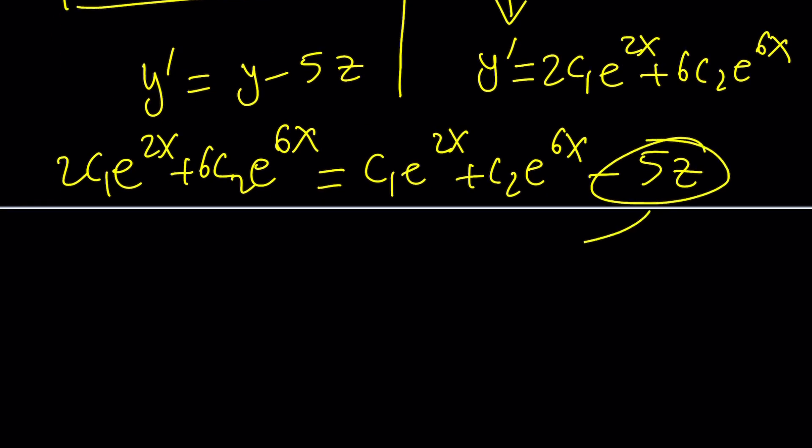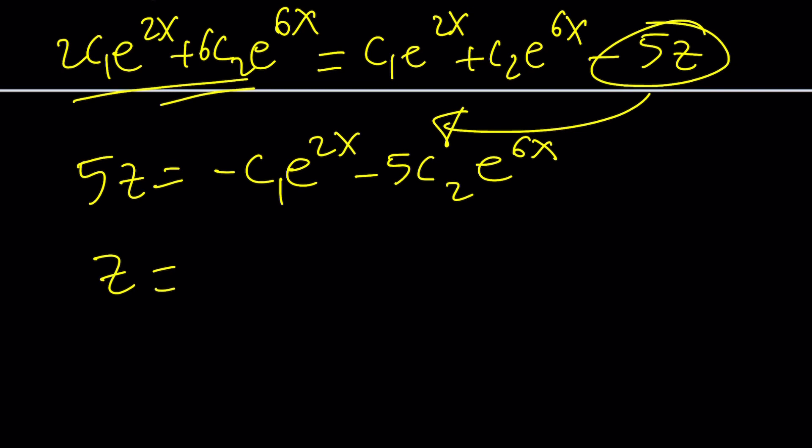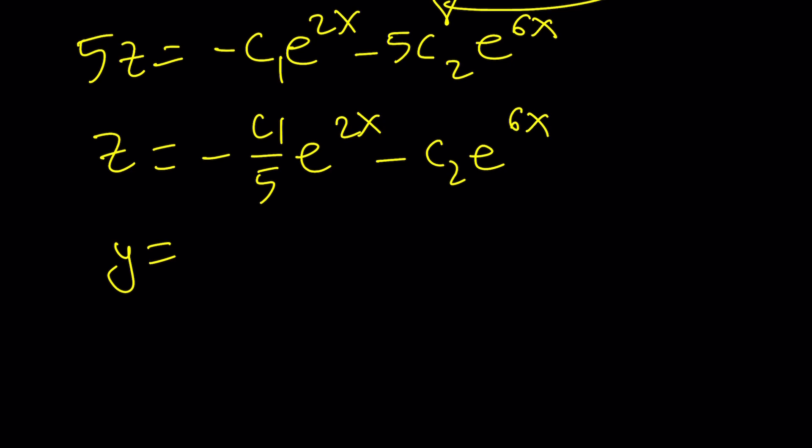So I'm going to go ahead and put this on the left hand side so it can become positive and bring these over to the right hand side. But that's going to give us negative c1 e to the 2x minus 5c2 e to the 6x. And then divide everything by 5. You're going to get z equals negative c1 over 5 e to the 2x minus c2 e to the 6x. Let me go ahead and bring the y down so that we can kind of look at those two together.